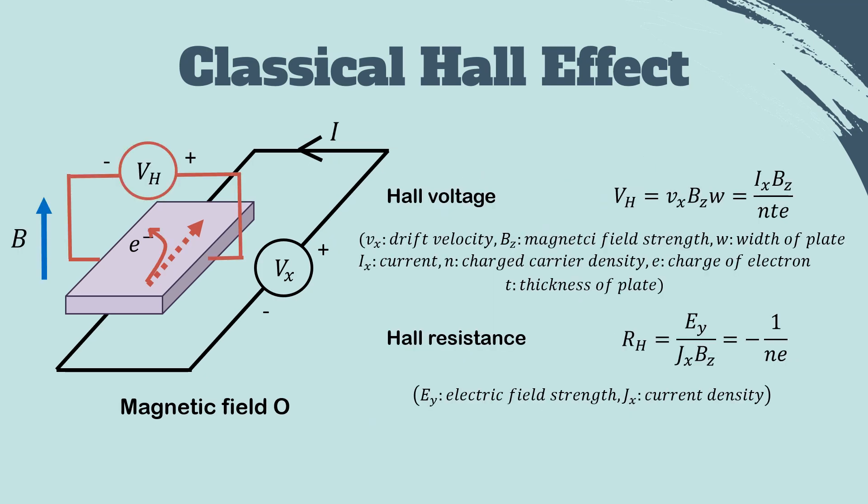Here, the voltage because of the Hall effect is defined as IB over Nte. Also, we can measure the Hall resistance RH. It is equal to minus 1 over Ne.